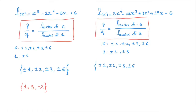Now we also have to consider the case where the factor of 3 is 3. In that case, we obtain plus or minus 1 over 3 and plus or minus 2 over 3. We also have plus or minus 3 over 3, but that's just equal to 1, and plus or minus 6 over 3, which equals 2 — and we've already listed those. So we add to our list plus or minus 1 over 3 and plus or minus 2 over 3.